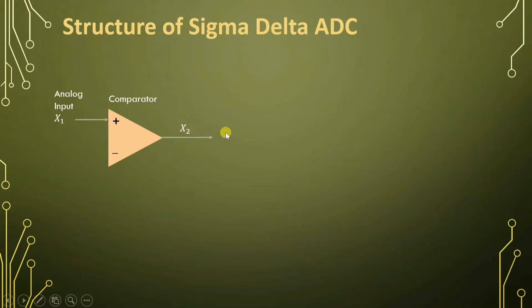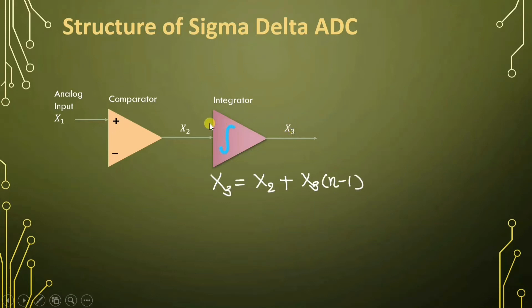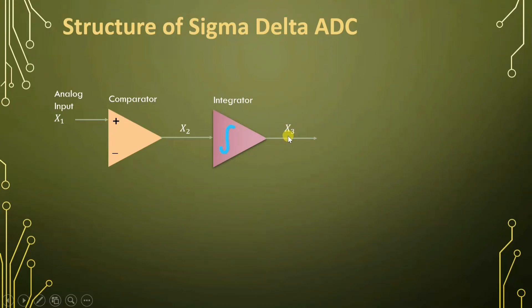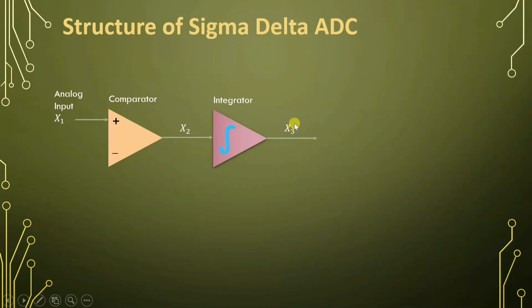This X2 is given to the integrator. After integration, our output will be X3. X3 will be the previous value of X3 plus X2. So for example, at the nth minus 1 sample, X3 equals X3 of n minus 1 plus X2. Later on in the flowchart you will see how this is happening.